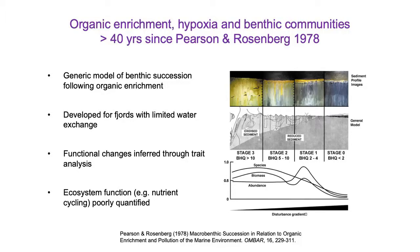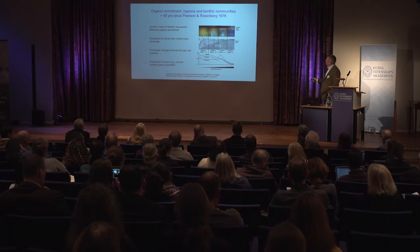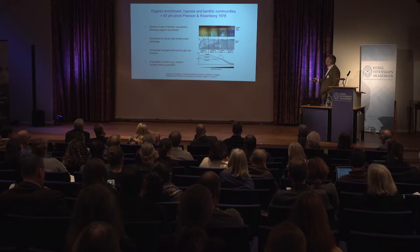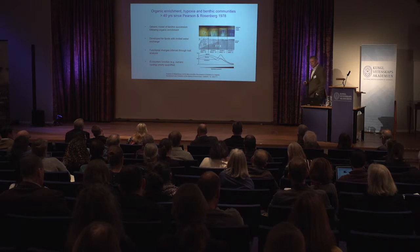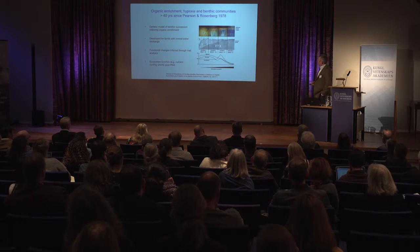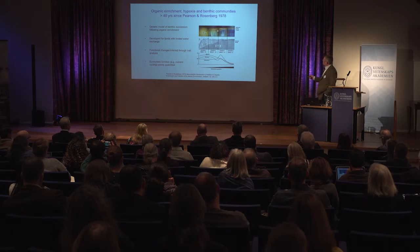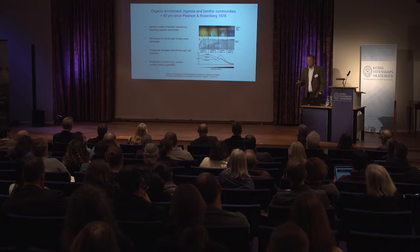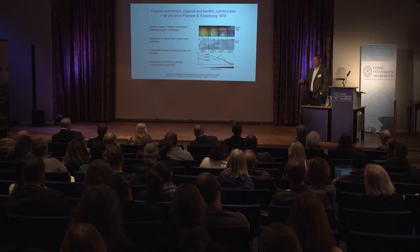If we think about benthic organisms, we haven't really moved on much beyond the famous paper by Tom Pearson and Rutger Rosenberg from the late 70s, which created a generic successional model describing the response of benthic communities to increasing organic enrichment. This was developed for fjord systems with limited water exchange. They described changes in species abundance and biomass of benthic macro-organisms along a disturbance gradient of increasing organic enrichment. Associated with this enrichment, you typically also have reduced conditions develop, as we can see in SPI photos. Basically, a lot of the deep-burrowing fauna is lost along the way, and at the end you get microbial communities dominating. The major point is that we lose the deep-burrowing organisms that might be quite important.